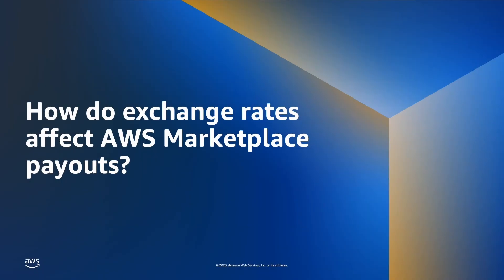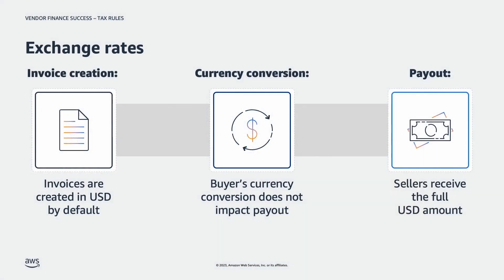Now, let's talk about exchange rates. There are three key things you should know about exchange rates and how invoices are created and paid. AWS Marketplace invoices are created in US dollars unless the buyer opts into a supported buyer currency conversion. The buyer's currency conversion does not impact the way AWS Marketplace pays out to the vendor. This will still be based on the US dollar amount that was originally entered as the cost of the product or private offer amount.